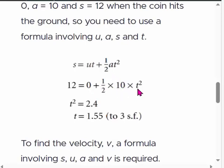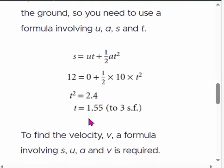Substituting: 12 = 0 + ½ × 10 × t². Simplifying, t² = 2.4. When you take the square root of that, we find the time is 1.55 seconds to 3 significant figures.